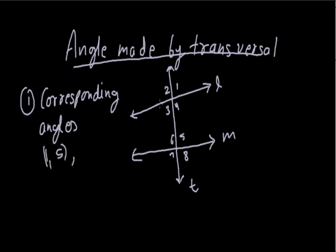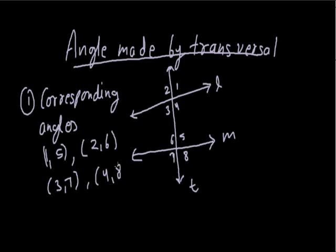In the same way, angles 2 and 6 are on the same side and both above the lines, so they are corresponding angles. Angles 3 and 7 are corresponding because they are on the same side and both below the lines. Angles 4 and 8 are also corresponding for the same reason. So there are 4 pairs of corresponding angles: (1,5), (2,6), (3,7), and (4,8).